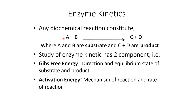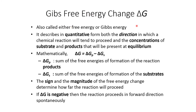In enzyme kinetics, any biochemical reaction can be represented as A plus B giving rise to C plus D, where A and B are the substrates and C and D are the products. The study of enzyme kinetics has two components: Gibbs free energy, which indicates the direction and equilibrium state of the substrate and product, and activation energy, which relates to the mechanism and rate of the reaction.